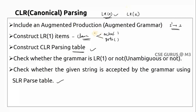For CLR we use LR(1), where k equals one. The procedure is somewhat similar to SLR: first include the augmented production, then construct LR(1) items (instead of LR(0) as in SLR), then construct the CLR parsing table, check for ambiguity, and verify whether the string is accepted.